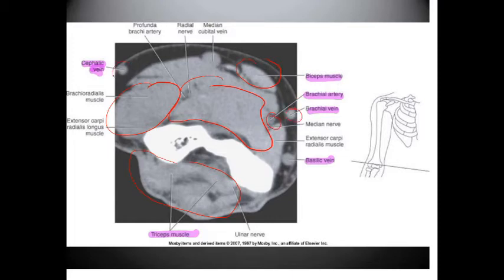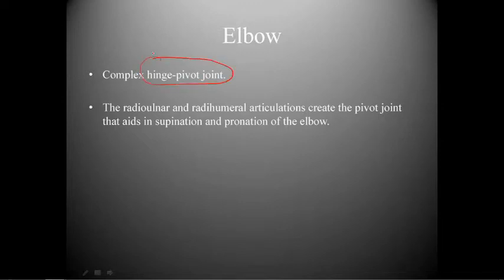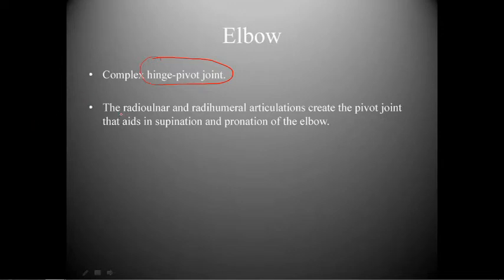The elbow is a hinge-pivot joint, meaning you can flex and extend it, but also rotate it to some degree. The radial-ulnar and radiohumeral articulations create the pivot joint that aids in supination and pronation. Without these two joints, pronation of the elbow would be impossible.